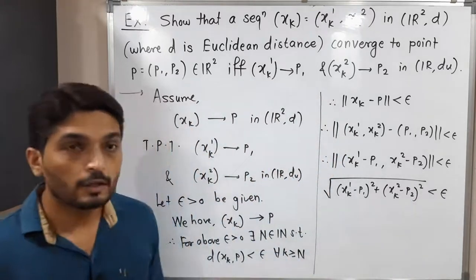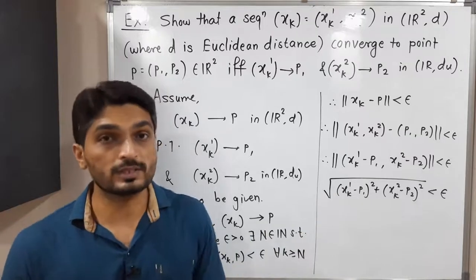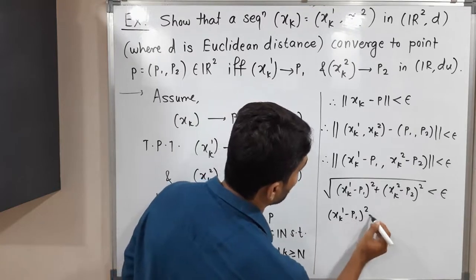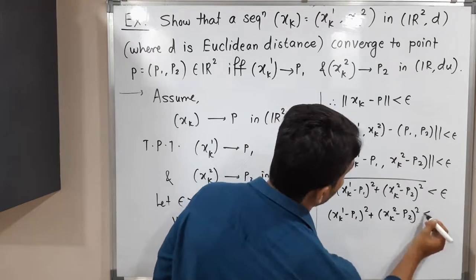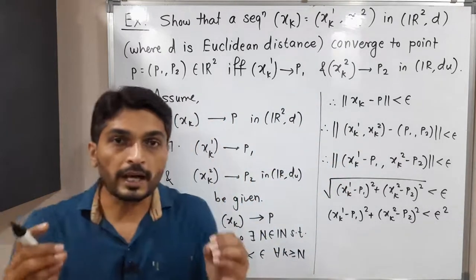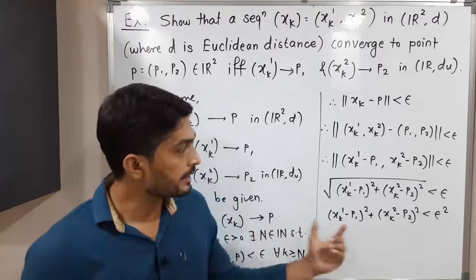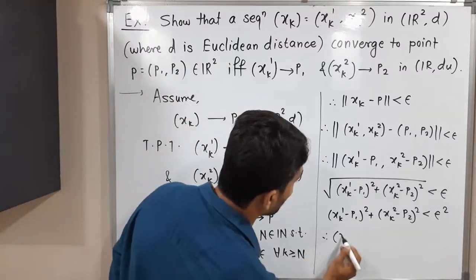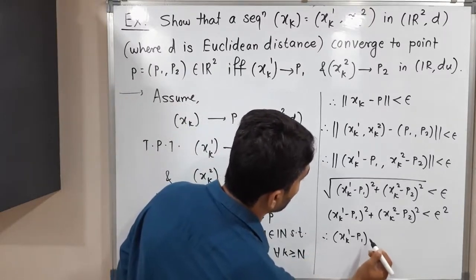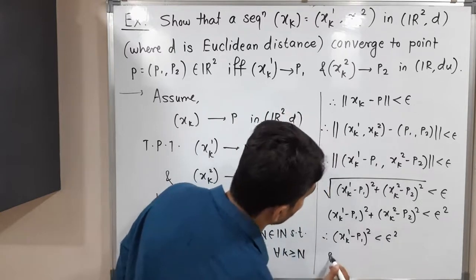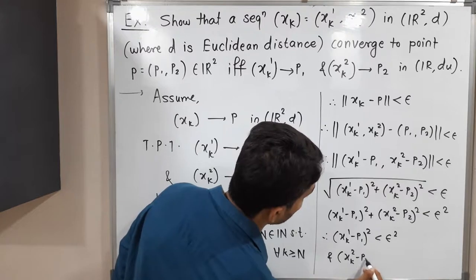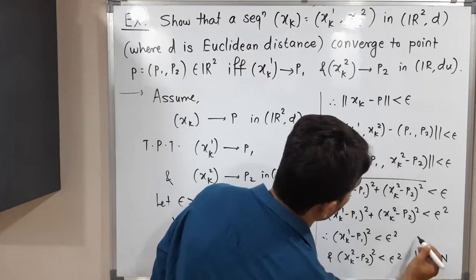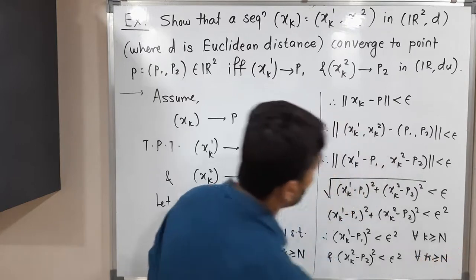To remove the square root, we take the square of both sides. Therefore we have (xk1 - p1)² plus (xk2 - p2)² less than epsilon². Since we are adding two non-negative terms whose sum is less than epsilon², each of them must be less than epsilon². So (xk1 - p1)² < epsilon² and (xk2 - p2)² < epsilon², both for all k greater than or equal to N.